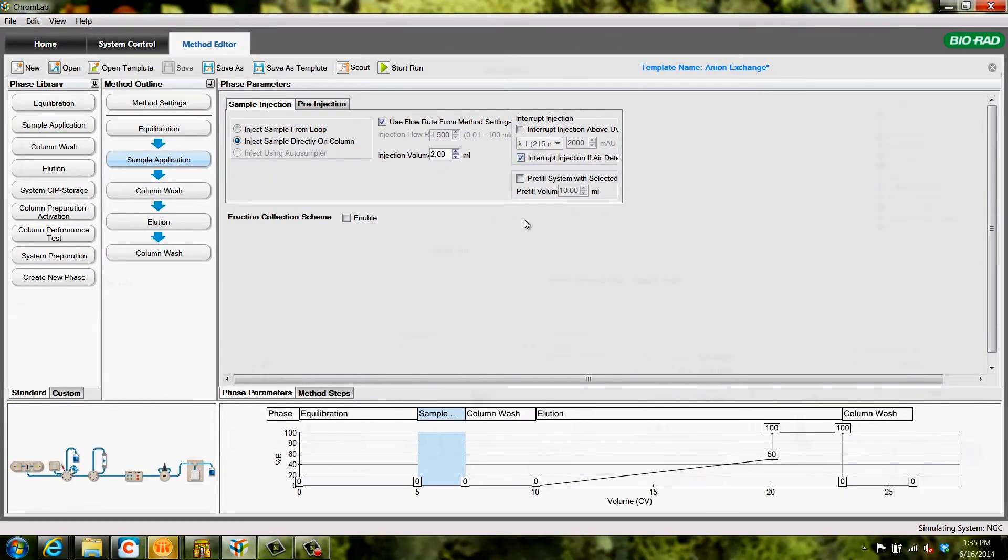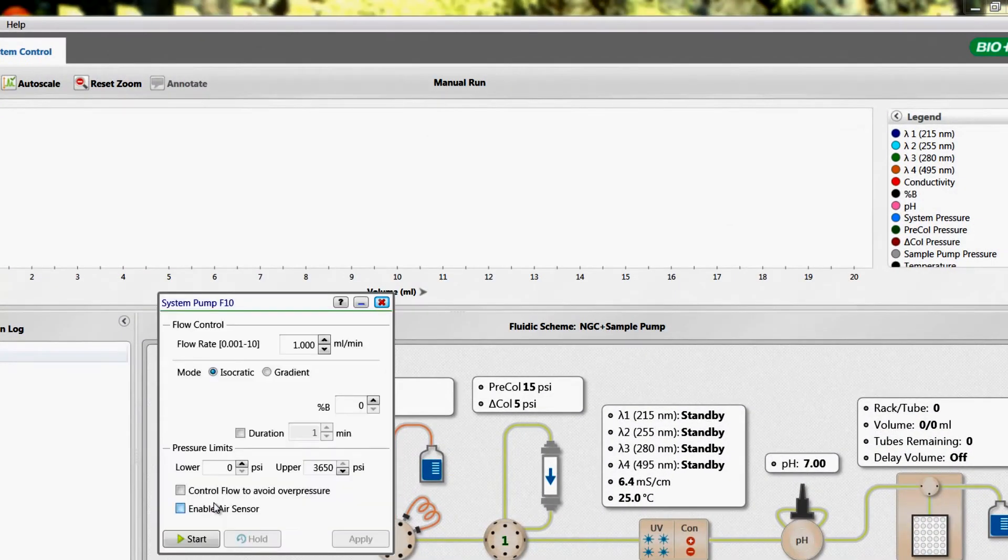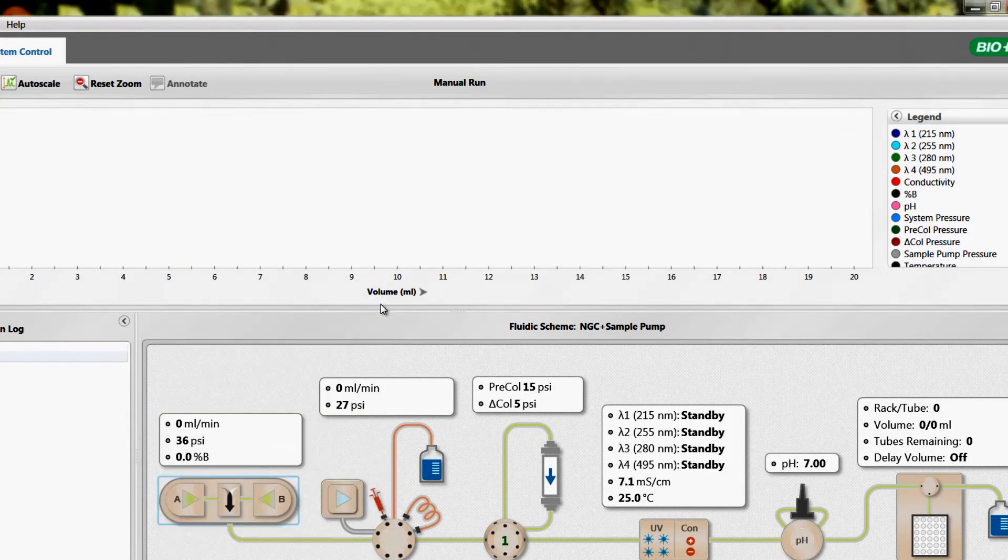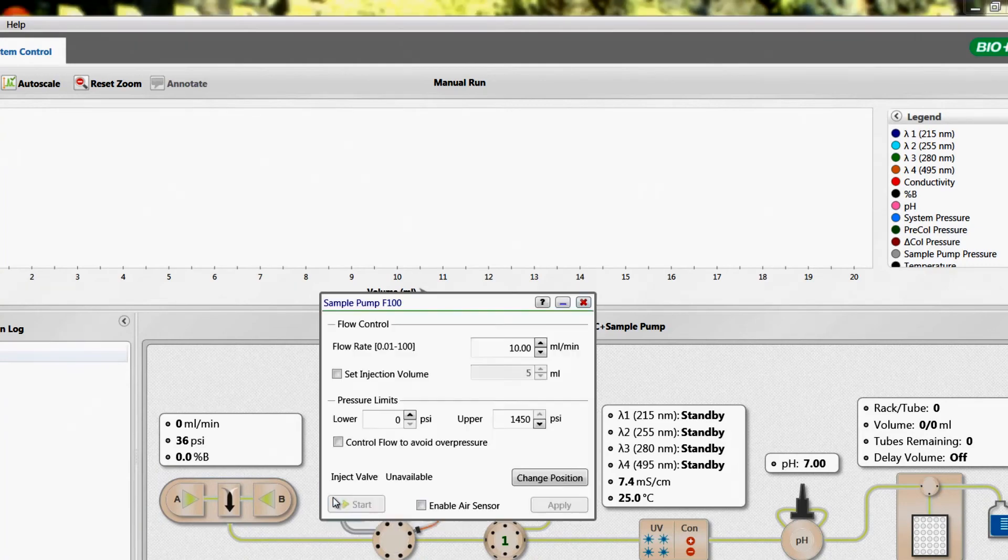If operating in manual mode, make sure the box next to enable air sensor is checked as desired for the system pump and or the sample pump.